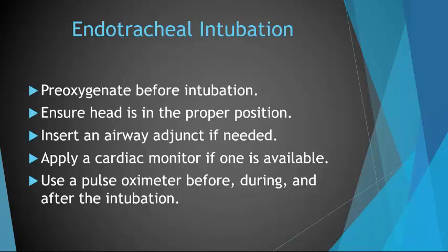To endotracheal intubate a pediatric patient, first pre-oxygenate the patient. This does not mean hyperventilation, but pre-oxygenation with a bag mask device and 100% supplemental oxygen for at least 2 to 3 minutes before you attempt intubation using the squeeze-release-release technique. Adequate pre-oxygenation cannot be overemphasized — you want to make sure that your SpO2 is up during the period of time you're going to be trying to intubate the patient. Ensure that the child's head is in proper position: neutral position with suspected spinal trauma, or sniffing position without trauma.